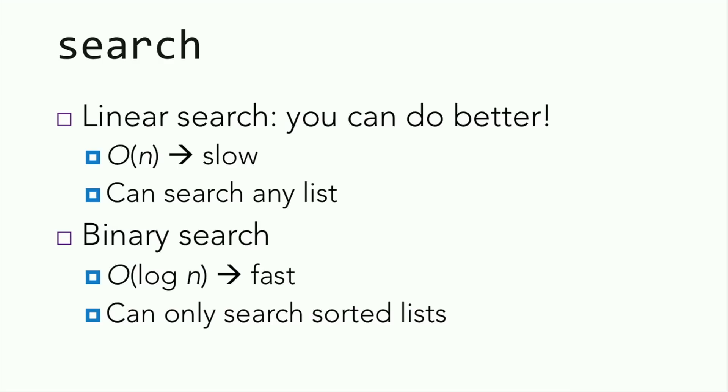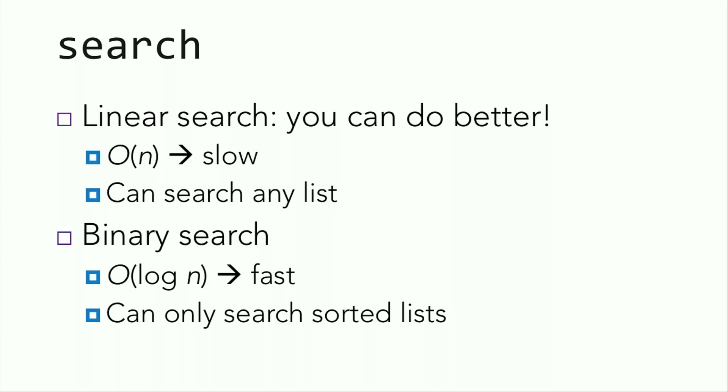So let's tackle search. Search is currently implemented as a linear search, but you can do much better than that. Linear search is implemented in O(n) time, which is quite slow, although it can search any list given to it. Your job is to implement binary search, which has runtime O(log n). That's pretty fast, but there's a stipulation — binary search can only search through pre-sorted lists.